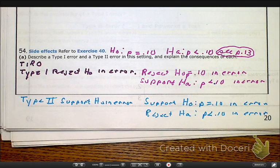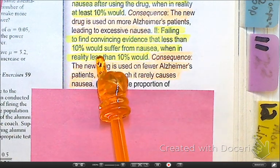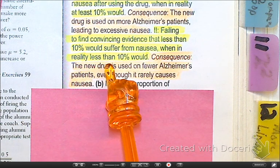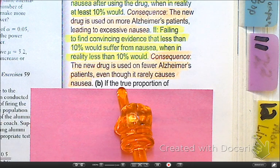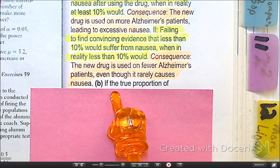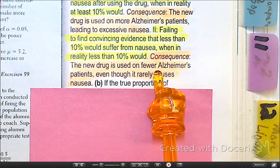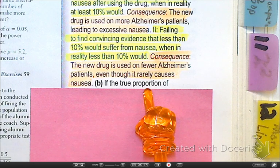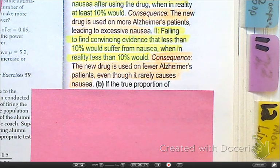Our type 2 error is failing to have convincing evidence that less than 10% would suffer nausea, when the reality is that it is true that less than 10% would suffer. The consequence here is that we have a new drug that causes fewer side effects, but it's going to be used by fewer patients — patients who should be using this drug are choosing not to because they're told the side effects are too great.